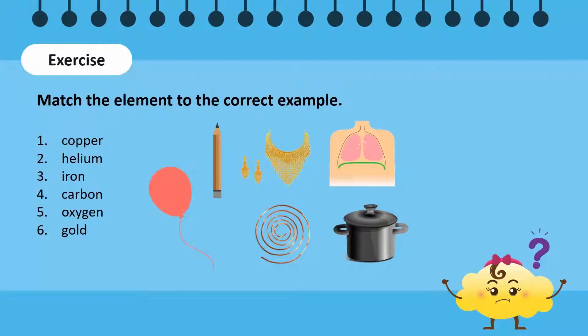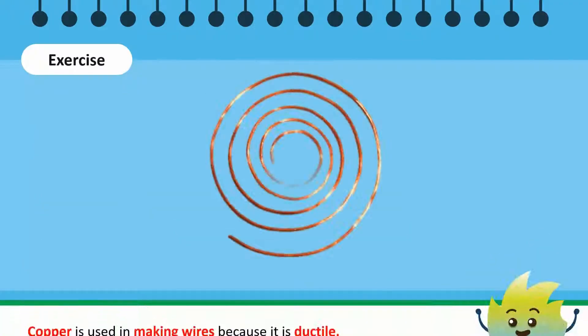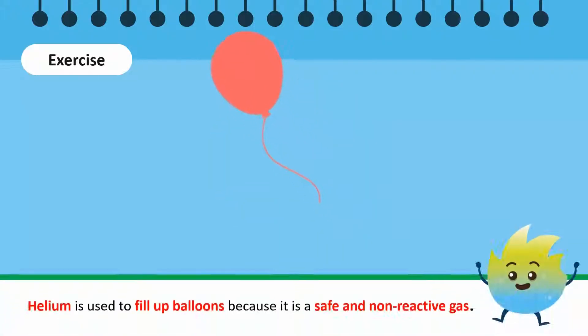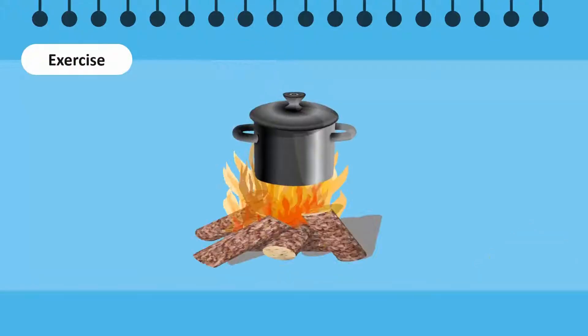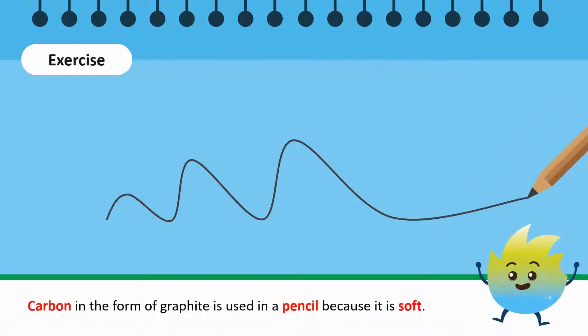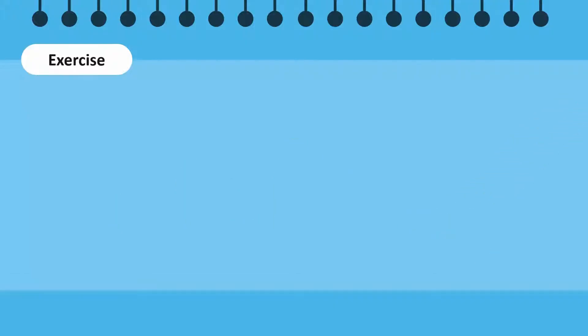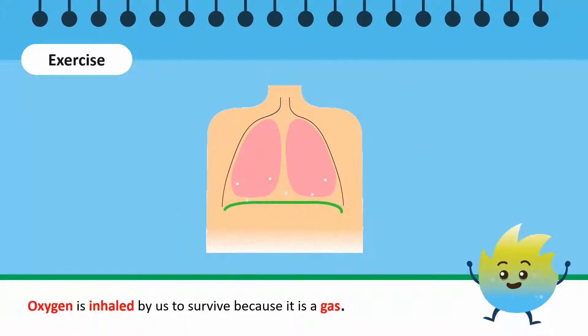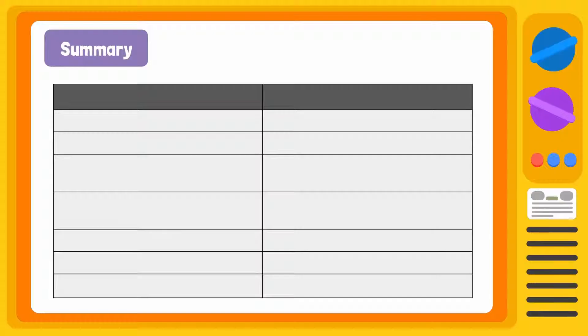Match the element to the correct example. Copper is used in making wires because it is ductile. Helium is used to fill up balloons because it is a safe and non-reactive gas. Iron is used to make pots because it is malleable and has a high melting point. Carbon in the form of graphite is used in a pencil because it is soft. Gold is used to make jewelry because it is shiny and lustrous. Oxygen is inhaled by us to survive because it is a gas.